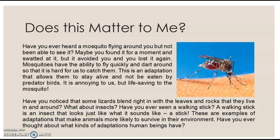Have you noticed that some lizards blend right in with the leaves and rocks that they live in and around? What about insects? Have you ever seen a walking stick? A walking stick is an insect that looks just like what it sounds — a stick. These are examples of adaptations that make animals more likely to survive in their environment. Have you ever thought about what kinds of adaptations human beings have? How do we survive in our environment?